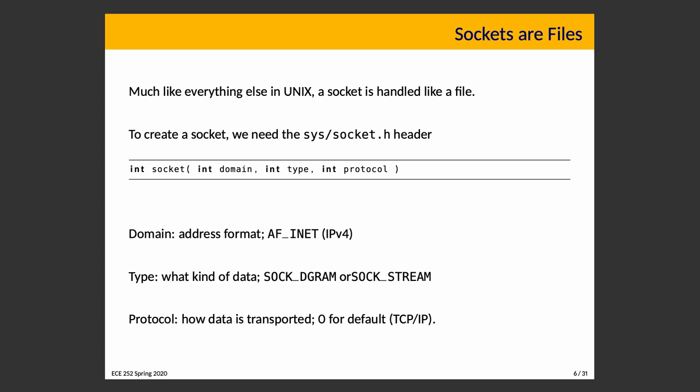For the type parameter, we choose whether we want a datagram or a stream. SOCK_DGRAM is for datagram and SOCK_STREAM is for stream — SOCK_STREAM is a bidirectional byte stream. Protocol is our choice for how data is transported. If we choose a stream, the default is TCP/IP — transmission control protocol over internet protocol — a mostly reliable method of transport that ensures your data gets where it needs to go with all pieces arriving in the correct order.